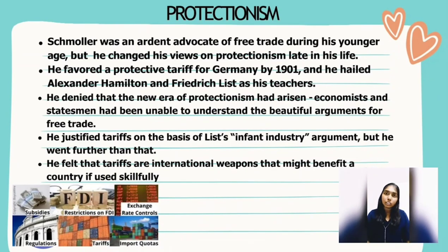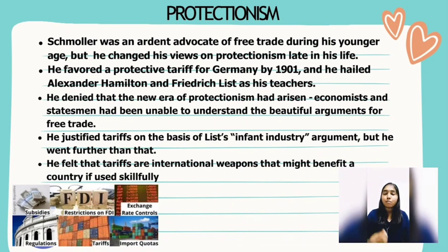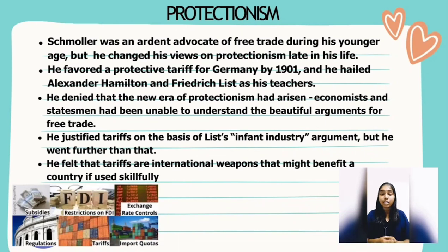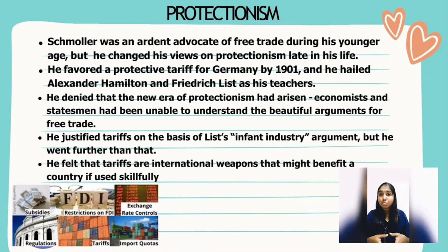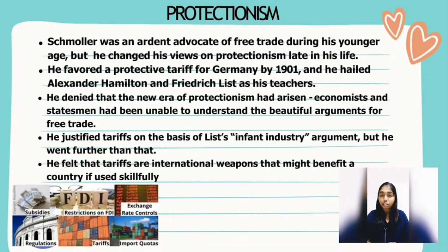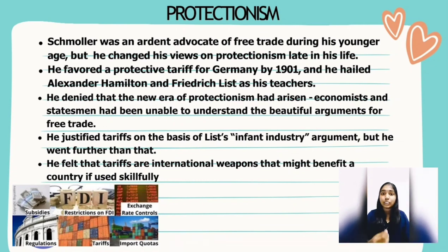Regarding protectionism, Schmoller was an ardent advocate of free trade during his younger years but changed his views later in life. He favoured a protective tariff for Germany and cited Alexander Hamilton and Friedrich List as his teachers. He denied that a new era of protectionism had arisen, arguing that economists and statesmen had been unable to understand the arguments for free trade. He justified tariffs on the basis of the infant industry argument but went further, feeling that tariffs are international weapons that might benefit a country if used skillfully.